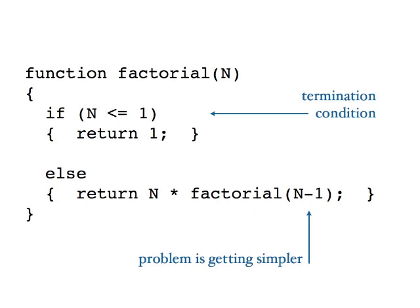Otherwise, as we've already explained, we call the factorial function on a simpler version of the problem. That is, in this case, we subtract one from the parameter. And we will return the result of the current value of the parameter multiplied by factorial of n minus one. So that's our recursive call on the simpler version of the problem.